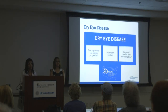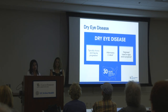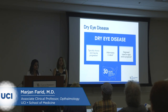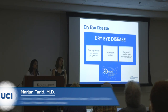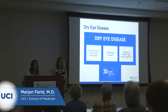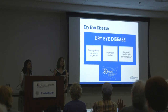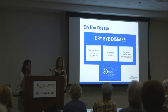Bacterial conjunctivitis is more concerning because babies can actually get it from birth — from the delivery. If the mother has an infection like herpes, syphilis, or chlamydia, the bacteria or virus can be transmitted to the baby during delivery. In adults, it's often similar — gonorrhea, chlamydia, and other sexually transmitted diseases can affect the eye. School-age children are more likely to get viral pink eye, which is extremely contagious, doesn't require antibiotics, and typically comes around late summer and early fall.